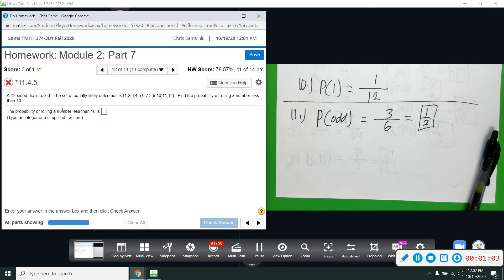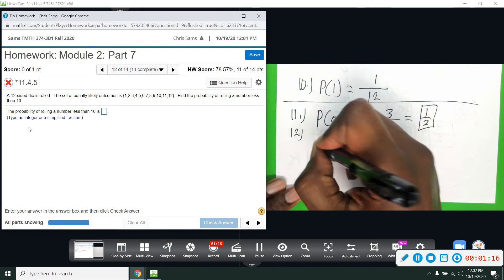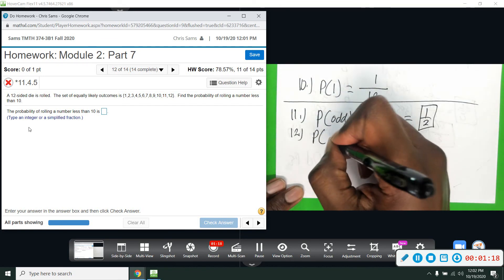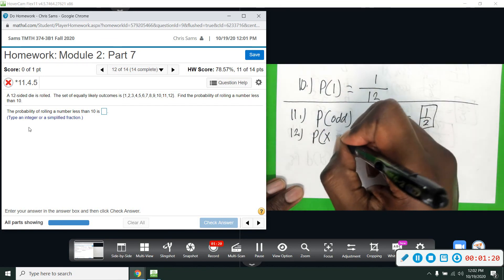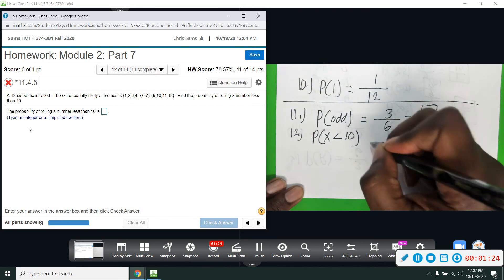A 12-sided die, equally likely outcomes, 1 through 12. We want to find the probability of rolling a number less than 10. Probability—I'm going to say X is going to be a random variable less than 10. So we want a number that is less than 10.